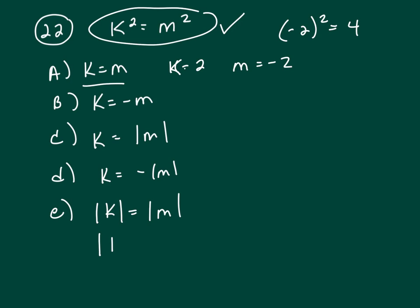The absolute value of k will equal the absolute value of m, because no matter what, when you take the absolute value of both of them, even if you had negative numbers on the inside, they're both going to be positive. So the answer is E.